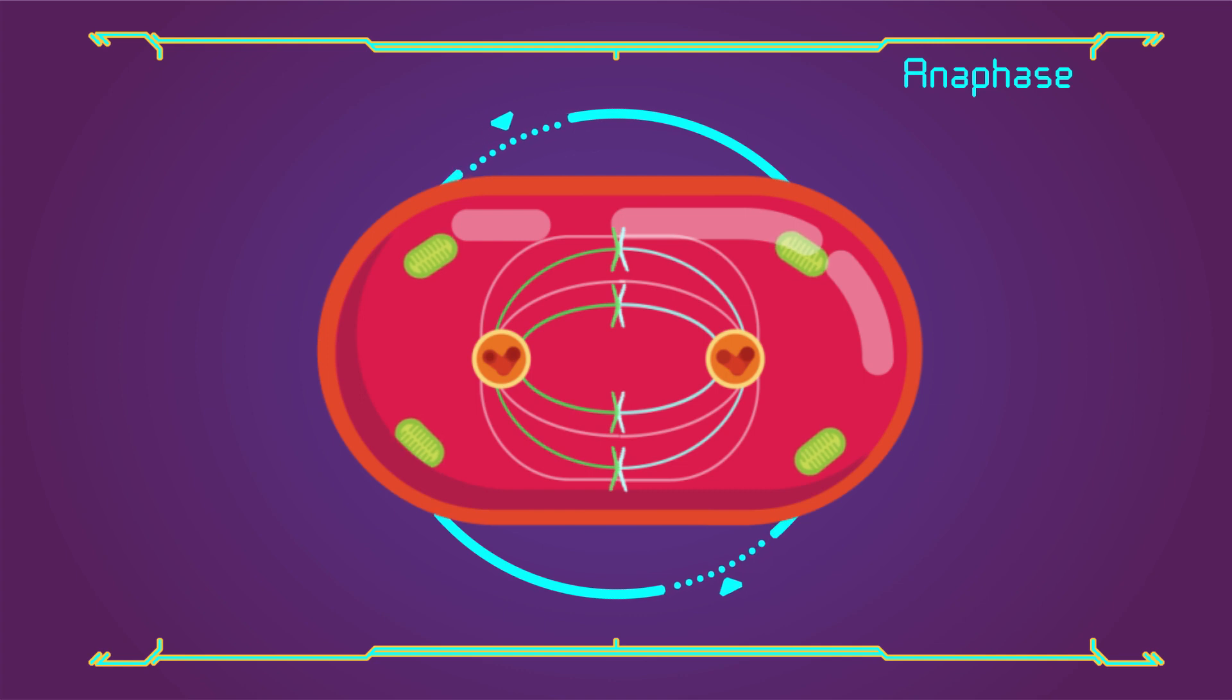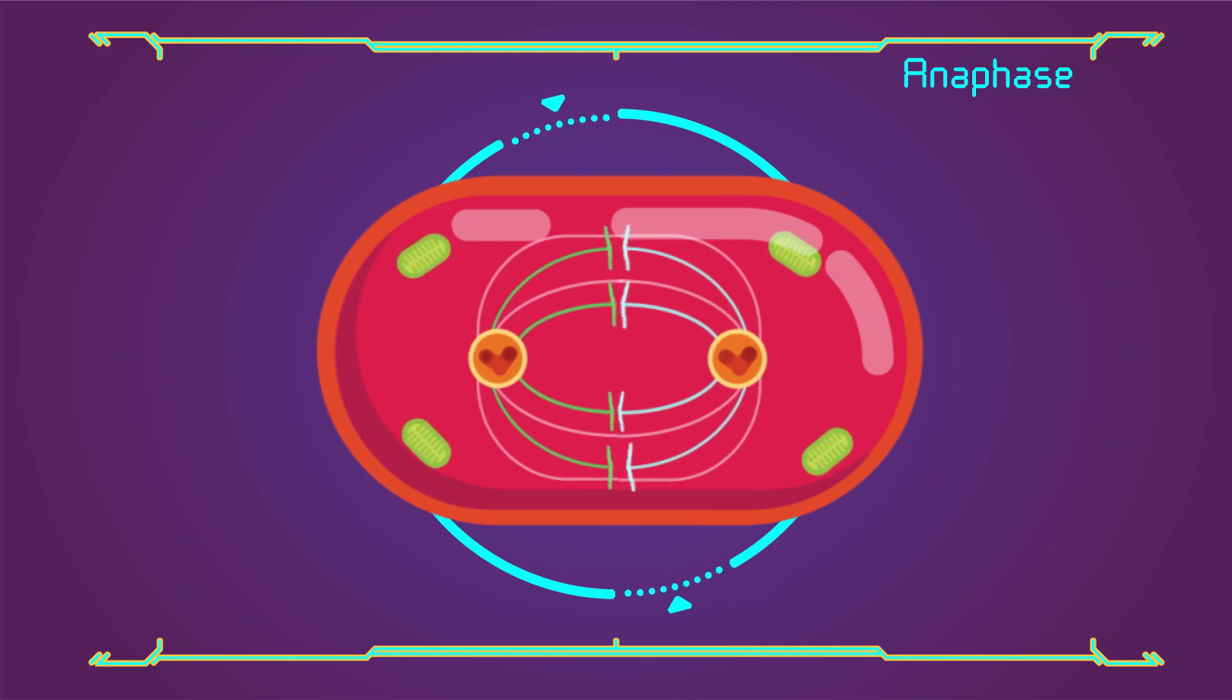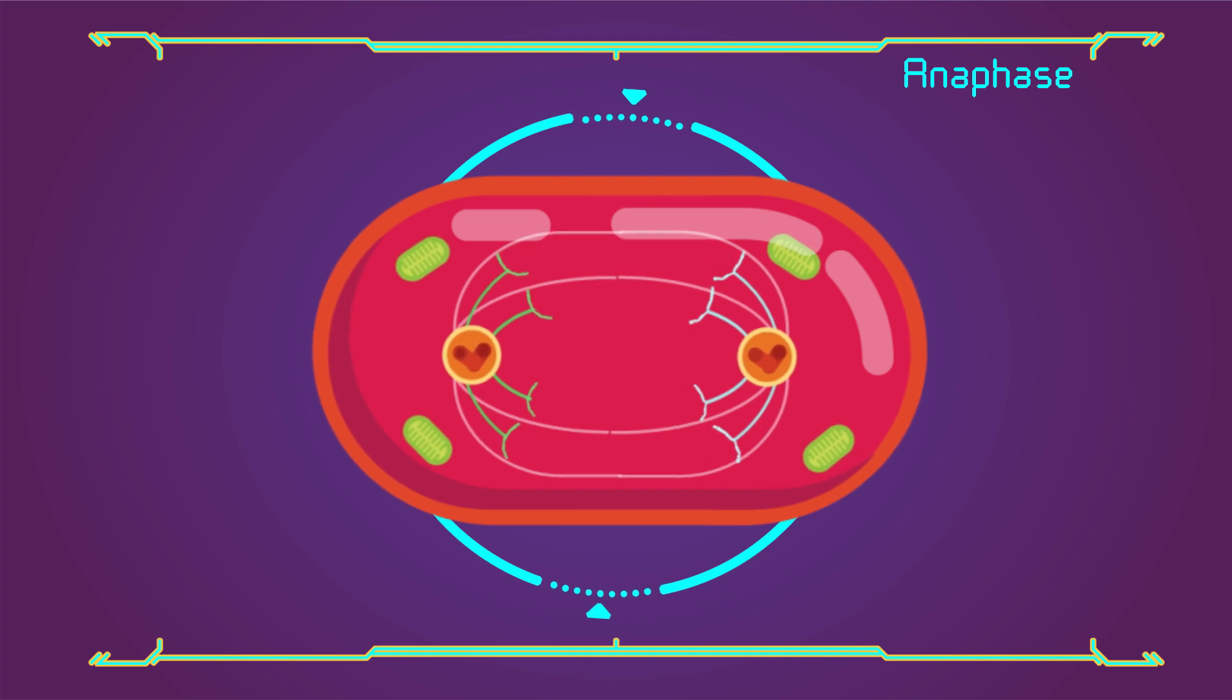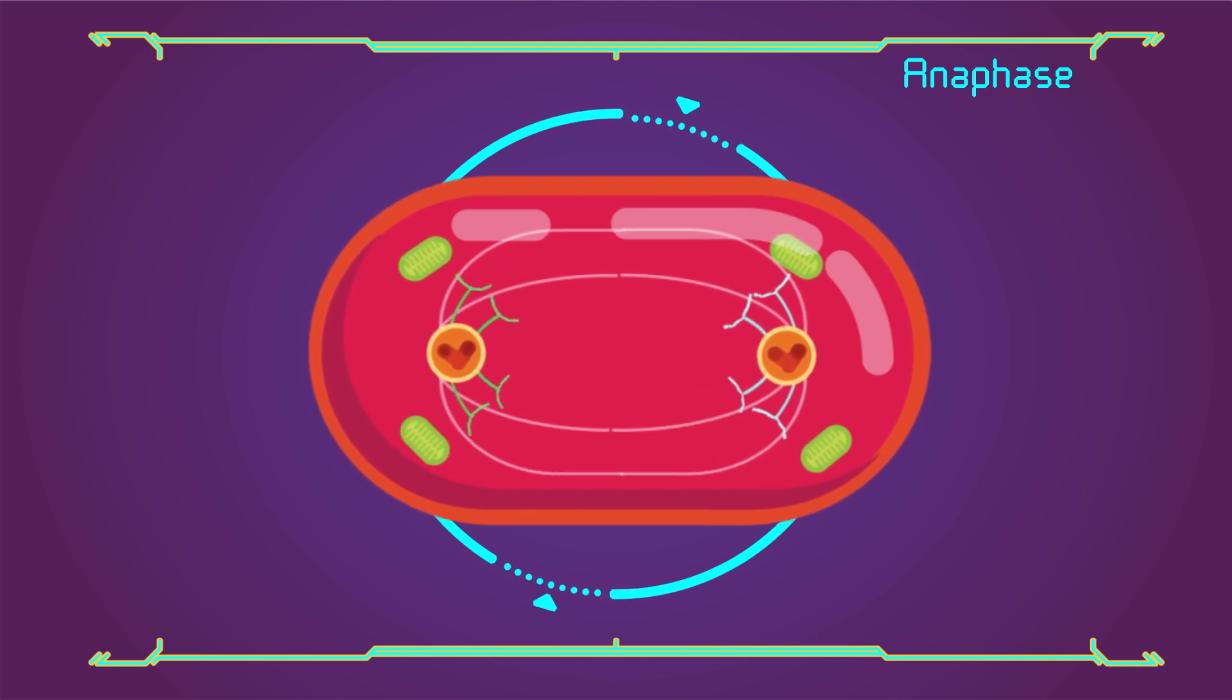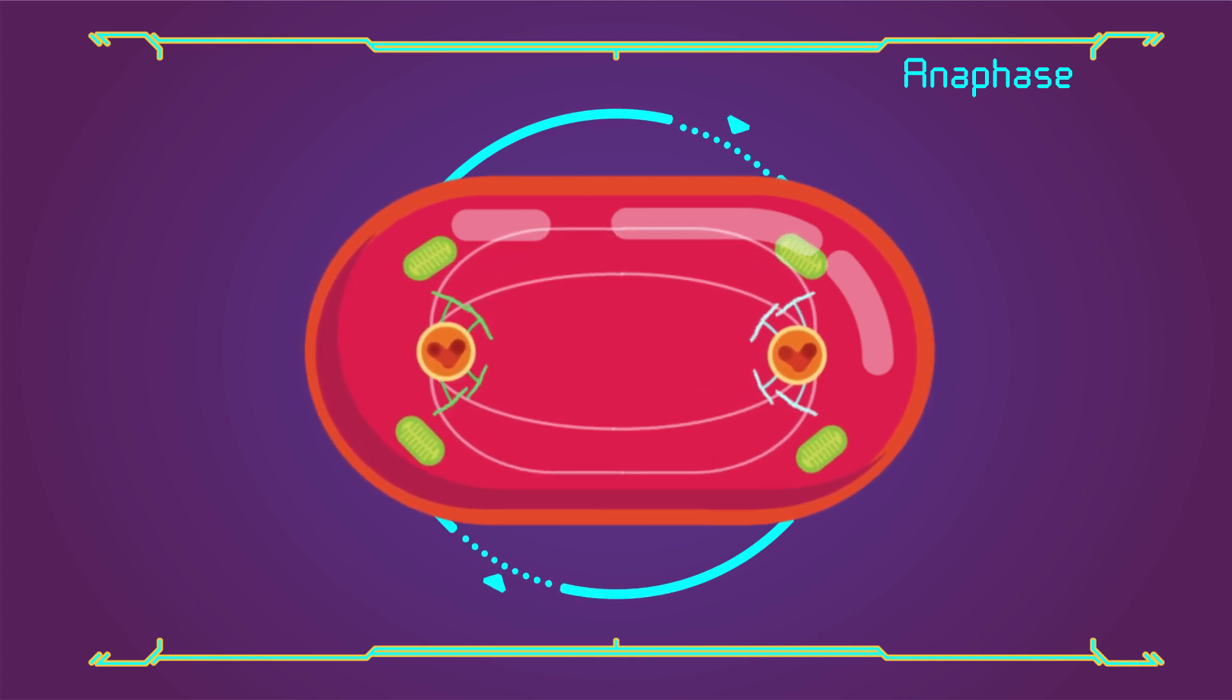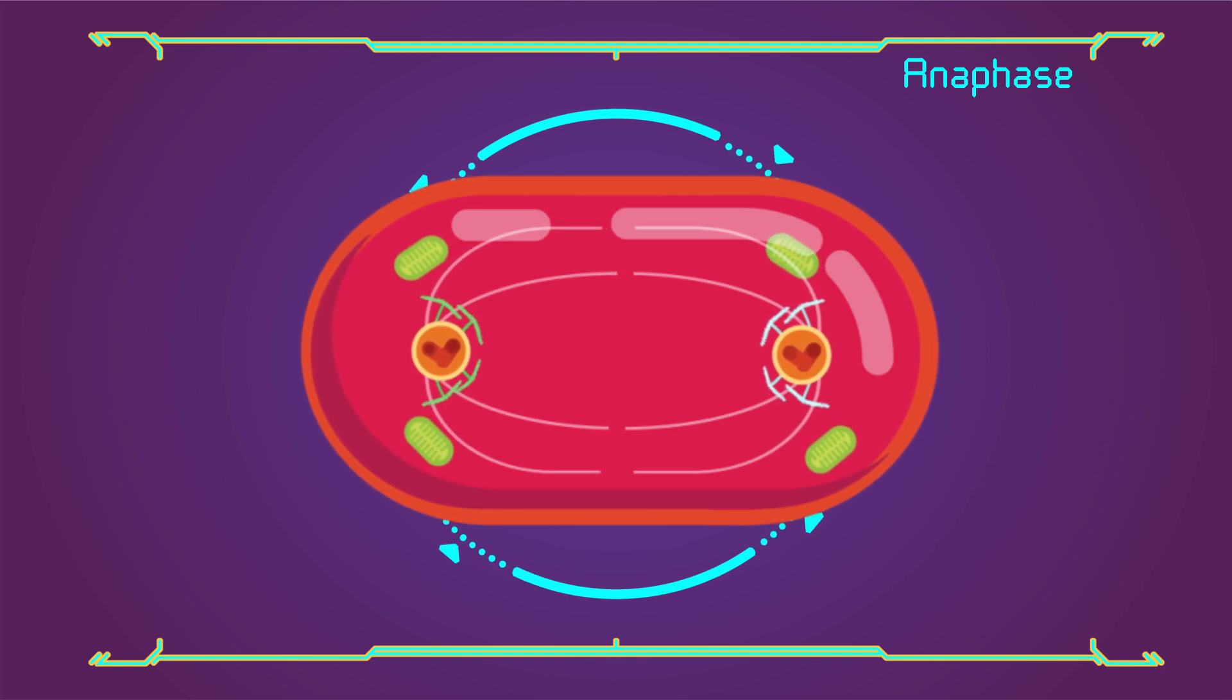Anaphase: here we go, the separation begins. Half of the chromosomes are pulled to one side of the cell, half go the other way. When the chromosomes get to the side of the cell, it's time to move on to telophase.